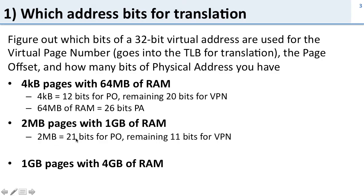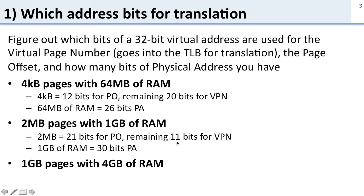For two megabyte pages we need 21 bits for the page offset, which means we've only got 11 bits left for the virtual page number. So if we have two megabyte pages we actually have more bits in the page offset than we do in the virtual page number.